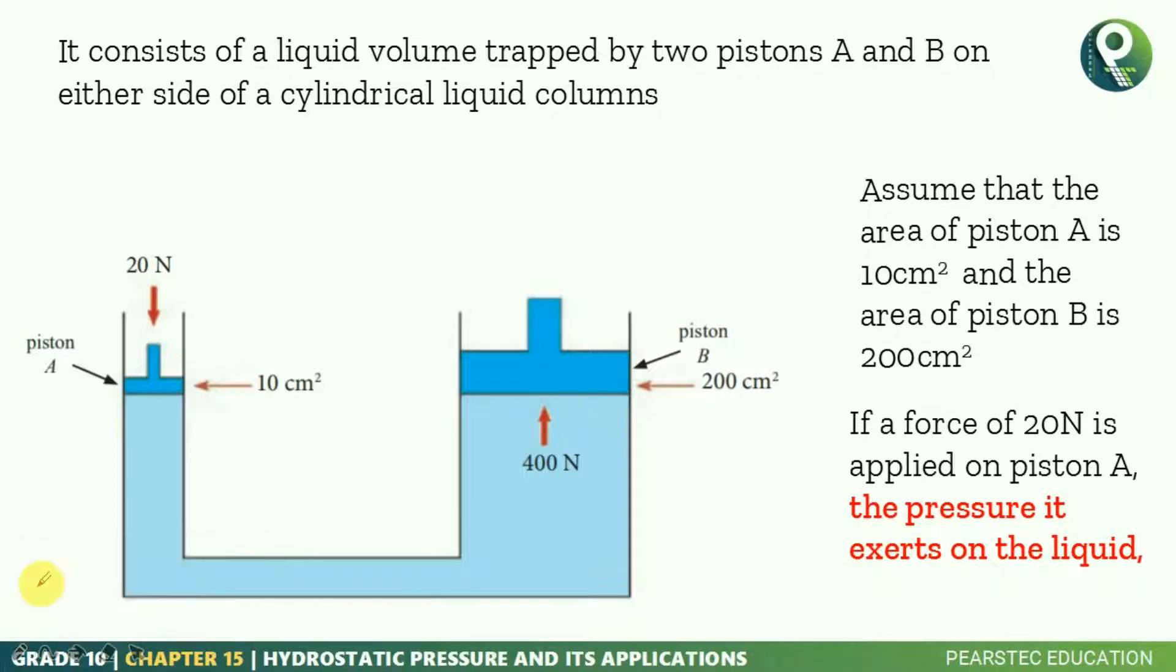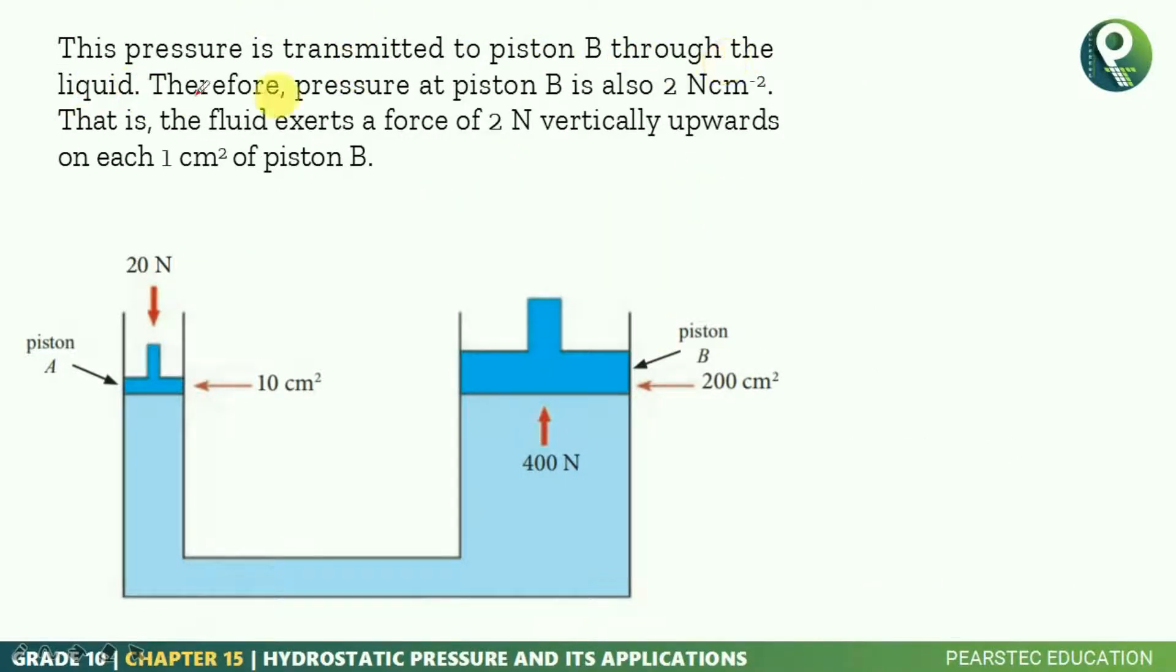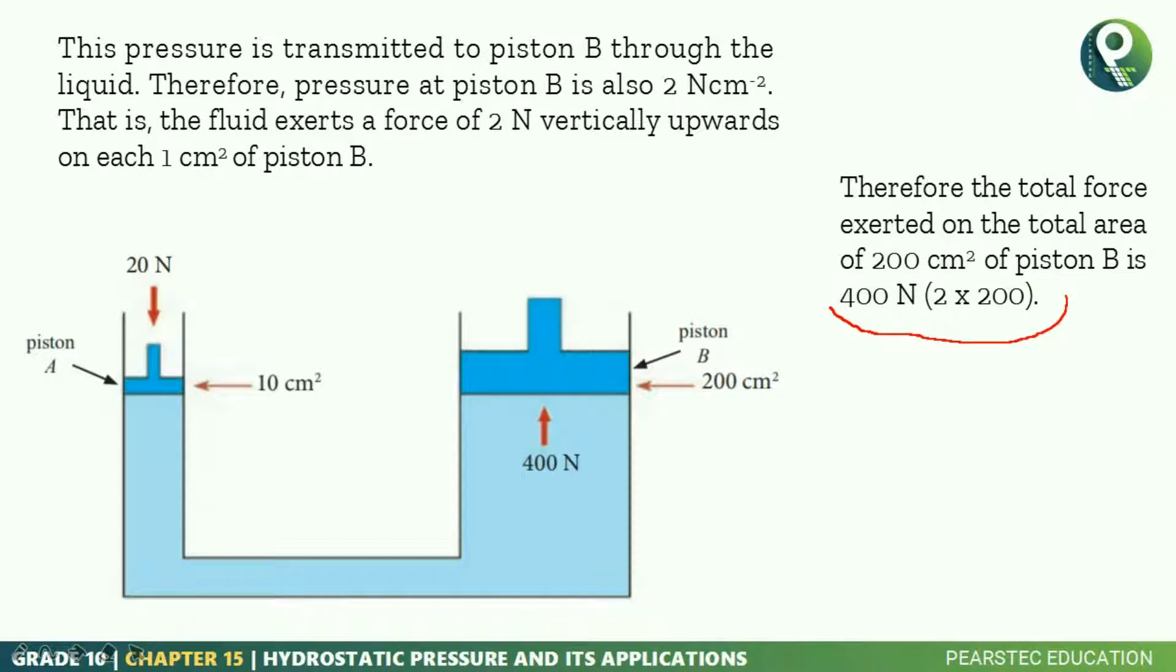If a force of 20 newton is applied on piston A, the pressure it exerts on liquid is what? Let's understand. If that pressure for 10 square centimeter is 20, for 1 square centimeter the pressure will be 2 newton, which is also applicable in this region also. But as it has 200 square centimeter, you can simply find out for 200 square centimeter how much force it can get: 2 multiplied by 200. Therefore, it is getting 400 newton force. This pressure is transmitted to piston B through the liquid. Therefore, the pressure at piston B is also 2 newton. That is, the fluid exerts a force of 2 newton vertically upward on each 1 square centimeter of piston. Therefore, it is getting 400 newton.